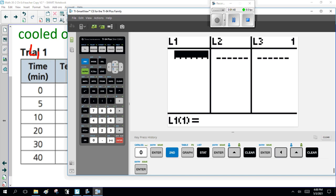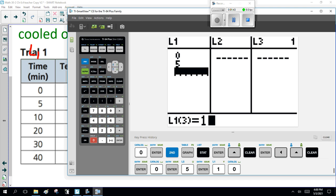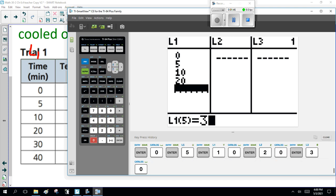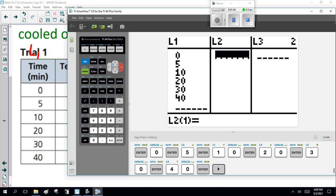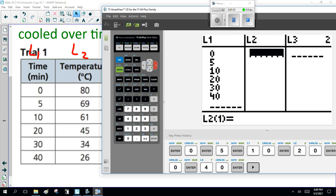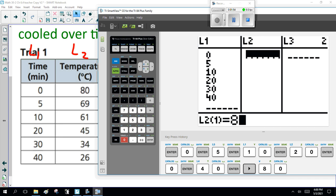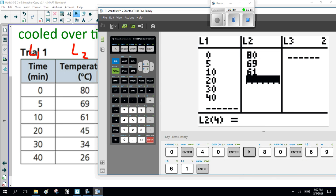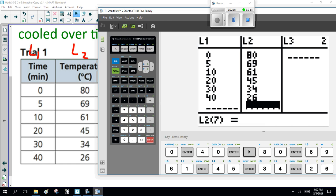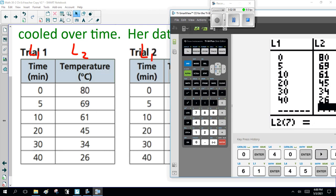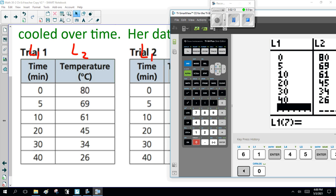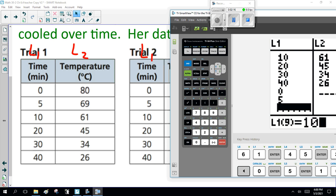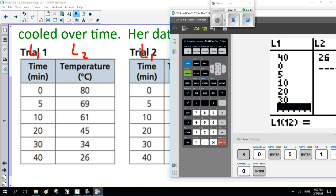So, time is going to be 0, 5, 10, 20, 30, 40. And the temperature for this is 80, 69, 61, 45, 34, 26. Alright? And then we do that again. So let's go over. More time. 0, 5, 10, 20, 30, 40.